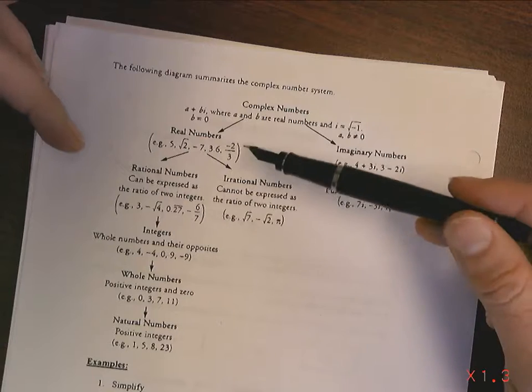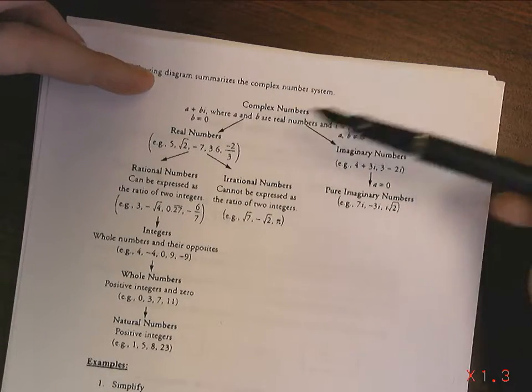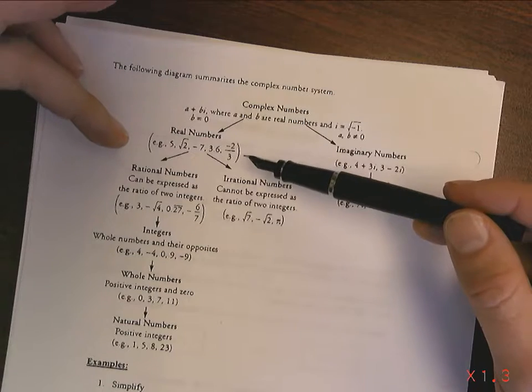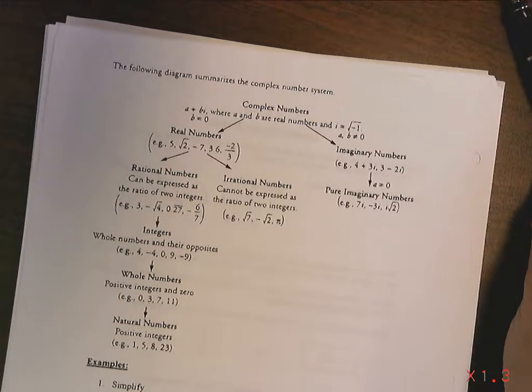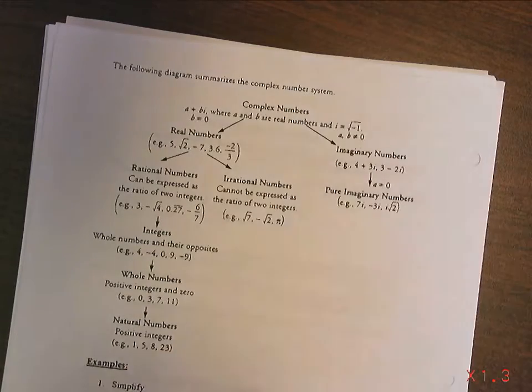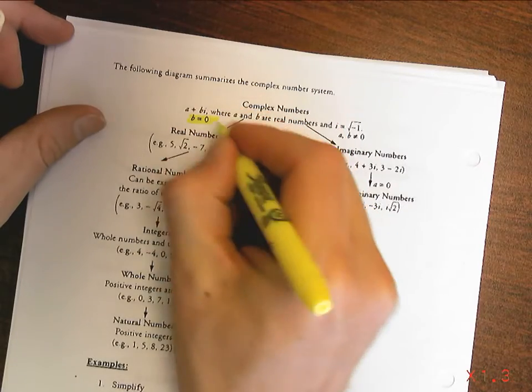We've already said that all the real numbers can be expressed as complex numbers, and that's where we either have a zero in for the b, right? So if the b is zero, then we know that what we've got is a complex number that's presenting itself as a real number.